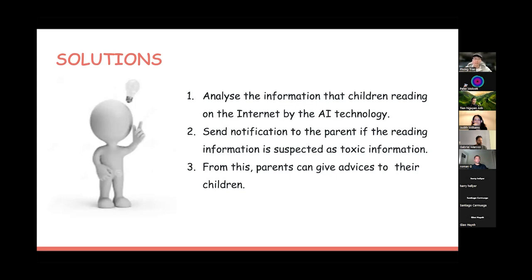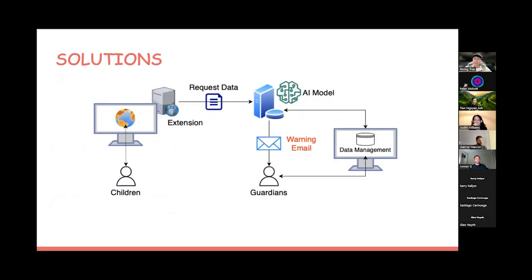They also give some feedback to the datasets to improve the AI model in the future. Our system architecture has four main components. The first one is extension. We focus on browser extension because it's easy to install in the web browser and doesn't require background in information technology. The second one is a server that deploys an AI model and a notification system.